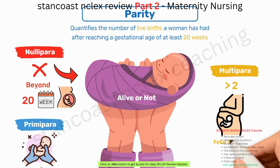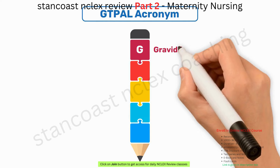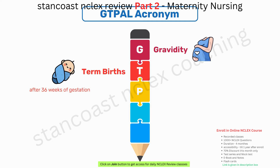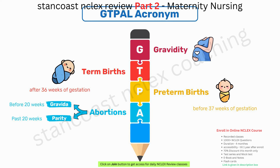To encapsulate this information, healthcare professionals often use the GTPAL acronym. G represents gravidity, the total number of pregnancies. T stands for term births, babies born after 36 weeks of gestation. P refers to preterm births, babies born before 37 weeks of gestation. A indicates abortions or miscarriages — counted in gravida if before 20 weeks of gestation, and in parity if past 20 weeks. L signifies the number of currently living children.